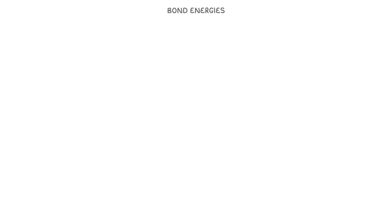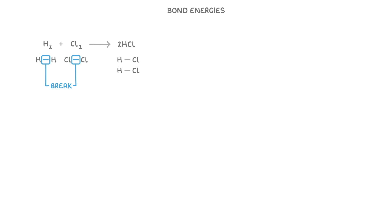So if we took a simple reaction, like hydrogen plus chlorine goes to form two hydrogen chloride, and we were to think about it in terms of molecules, then we could see that for the reaction to work, we'd have to break this hydrogen-hydrogen bond and this chlorine-chlorine bond, which would both require energy and be endothermic processes, and then we'd form two of these hydrogen-chlorine bonds, which would release energy and so be exothermic processes.